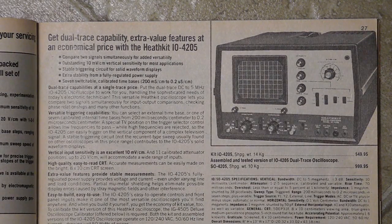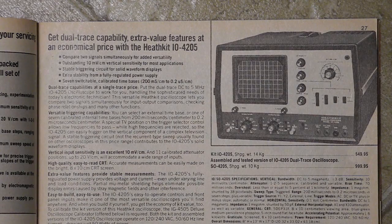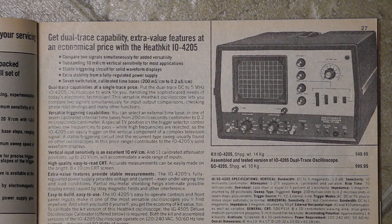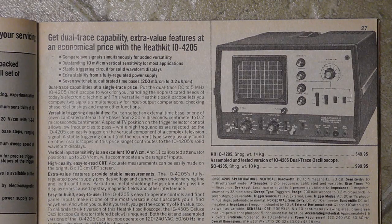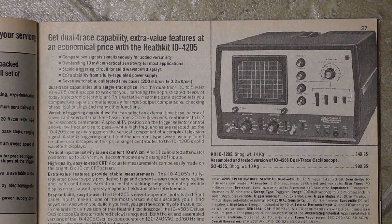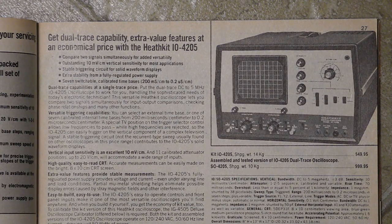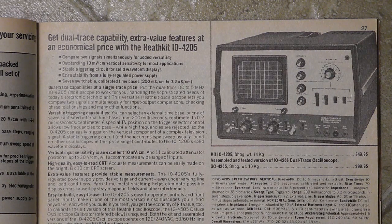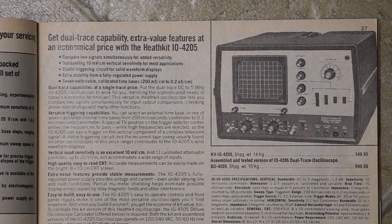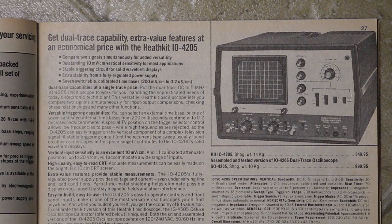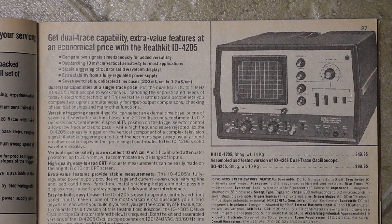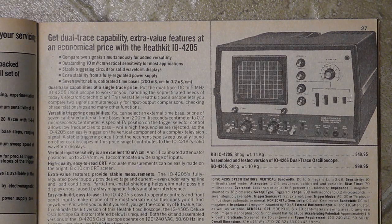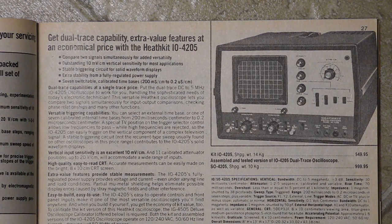The IO4205 was a dual channel oscilloscope offered by Heathkit from 1979 to 1987. My 1982 Canadian Heathkit catalog listed it at a price of $549.95 as a kit and $999.95 fully assembled. The assembled version was known as the SO4205. I've seen another undated US catalog that listed it at $329.95 for the kit and $480 assembled.